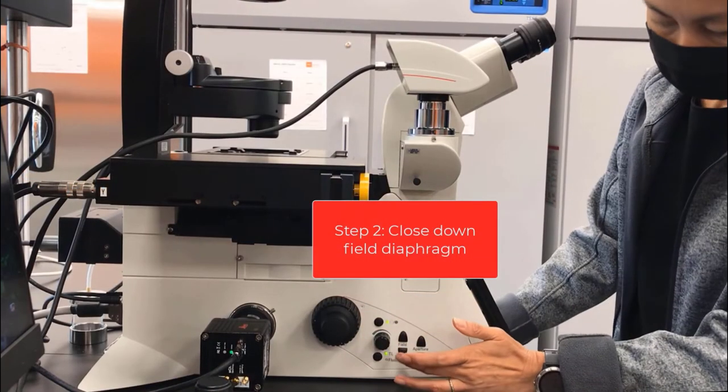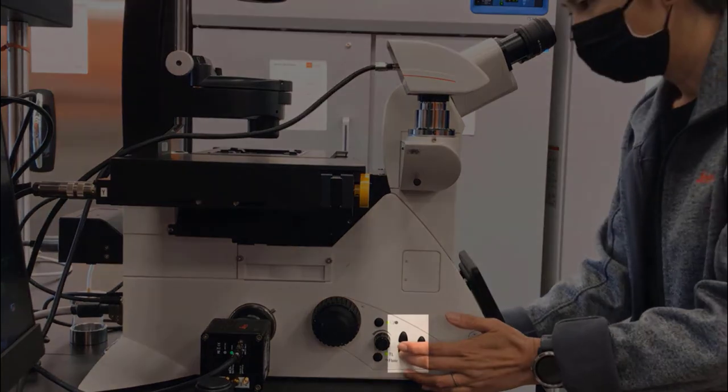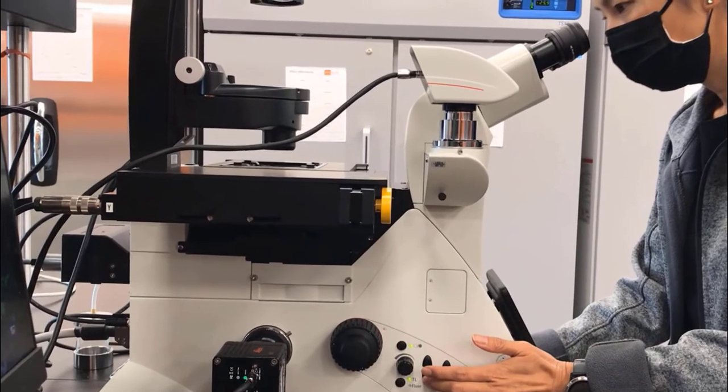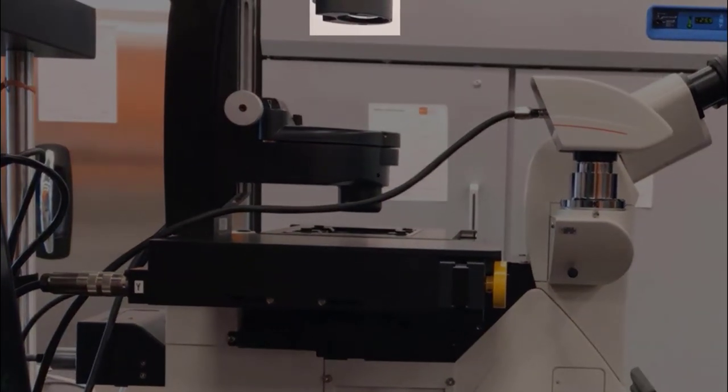Next, close down your field diaphragm using the buttons on the left side of the microscope. You can also adjust the field diaphragm using the front touch screen. If you have a manual microscope, your field diaphragm can be closed manually at the top of the transmitted light arm.